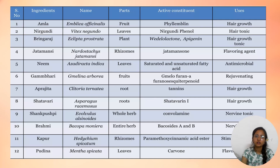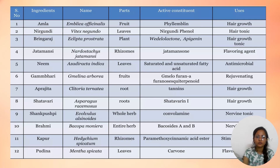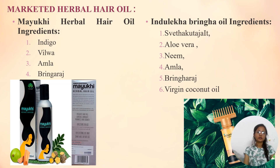In this table, the important parts are herbal ingredients, their plant parts used, and uses. Amla — fruit, used for hair growth. Nirgundi — leaf, used for hair toning. Bhringraj — whole plant, used for hair growth and toning. Jatamansi — rhizome, used for flavoring. Neem — leaf, used for anti-properties. Gambari — fruit, used for nourishing. Aparajita — root, used for hair growth. Shatavari — root, used for hair growth. Shankhpushpi — whole herb, used for nervine toning. Brahmi — entire herb, used for nervine toning. Kapoor — rhizome, used as stimulating agent. Pudina — leaf, used as flavoring.